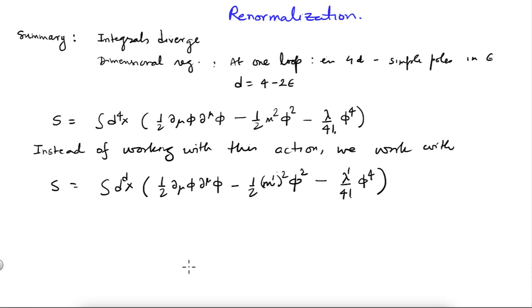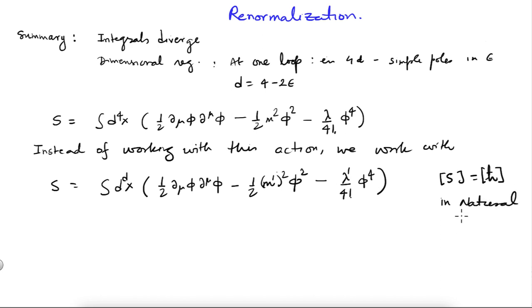Let us do the simplest exercise of checking the mass dimensions of the fields, the mass parameter, and the coupling constant. Remember that the action S has dimensions of h-bar, or Planck's constant. Since we are in natural units where h-bar equals 1 and c equals 1, h-bar is dimensionless, so the action is dimensionless — the mass dimension of S is zero, i.e., M to the power zero.